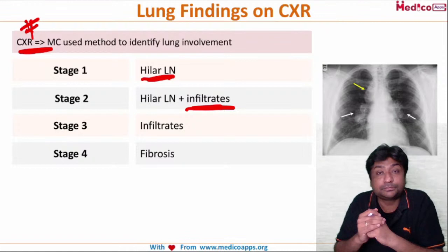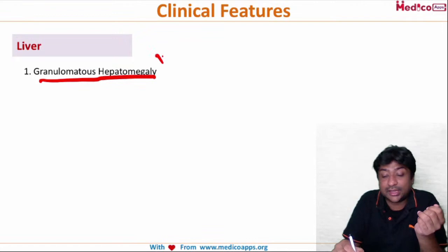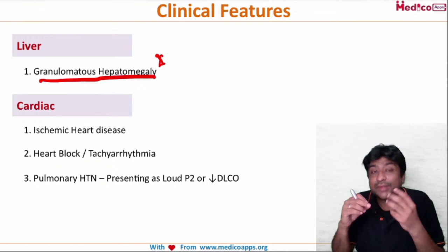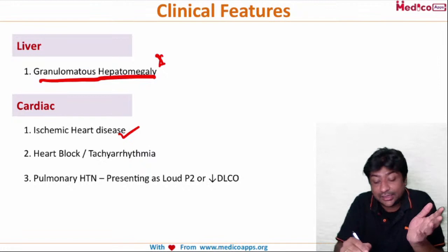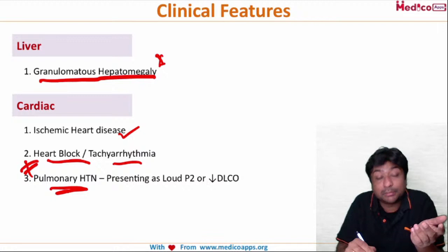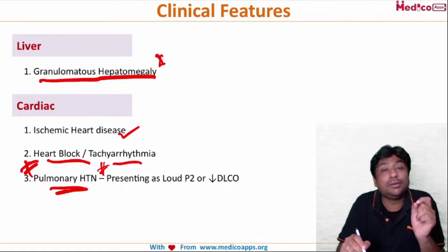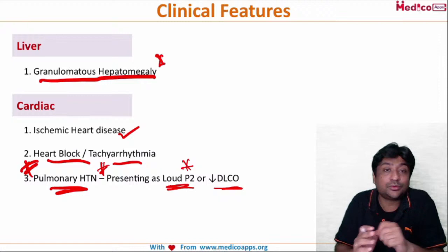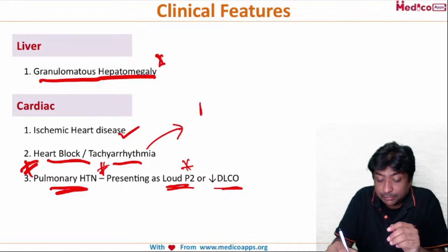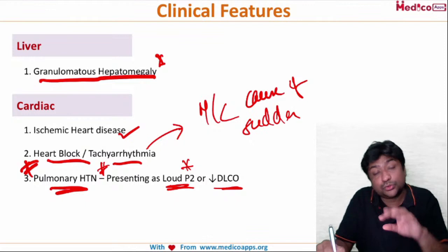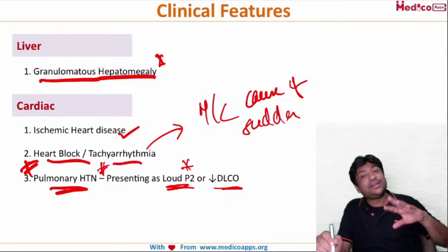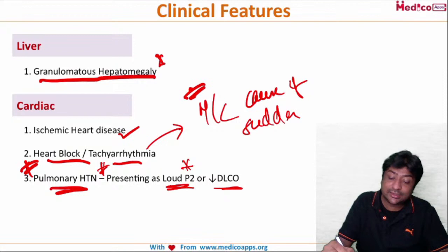GI: granulomatous hepatomegaly — granulomas form in the liver causing hepatomegaly, which may be tender. Cardiac: though least involved, granuloma formation can lead to ischemic heart disease, heart block, tachyarrhythmias, or secondarily pulmonary hypertension (indicated by loud P2 or decreased diffusion lung capacity). Tachyarrhythmias or bradyarrhythmias are the most common cause of sudden death; respiratory failure is the most common cause of death overall; angio-invasive mycetoma is second.